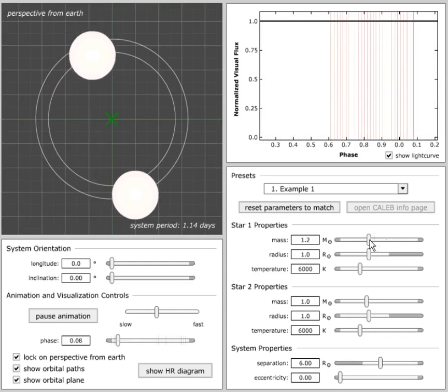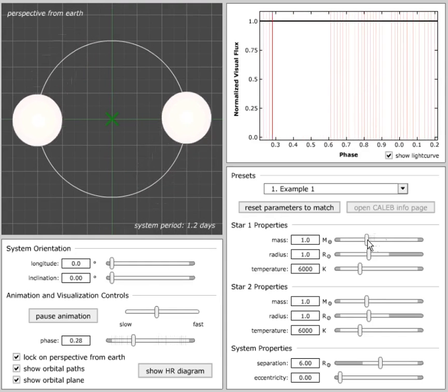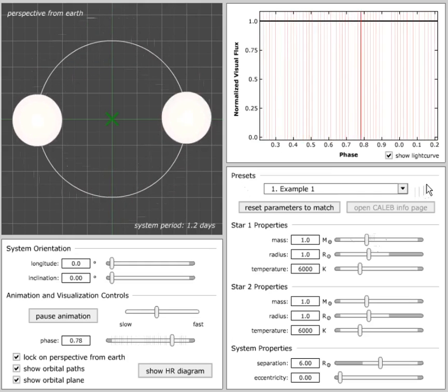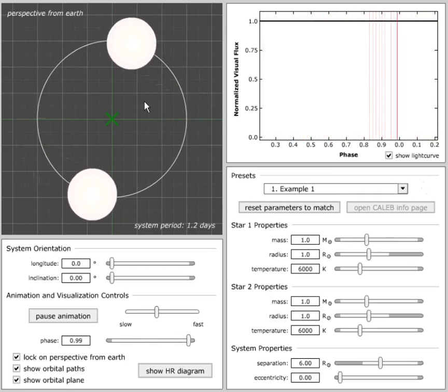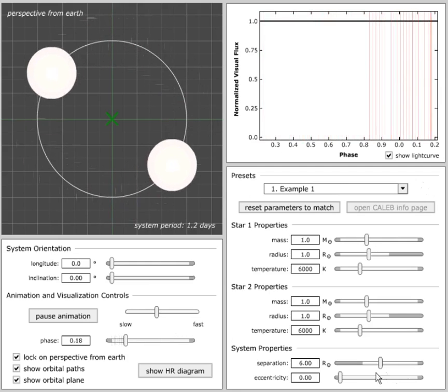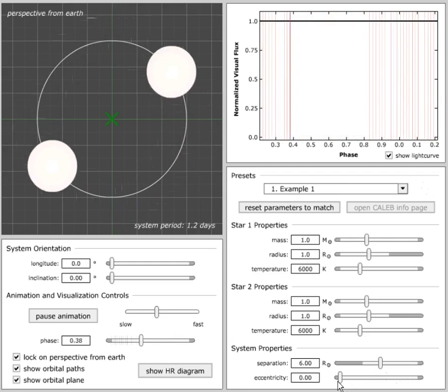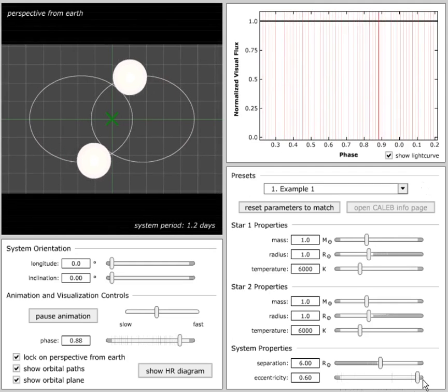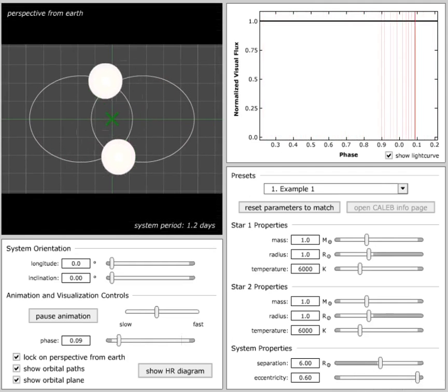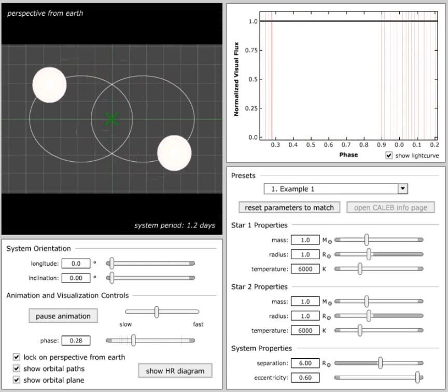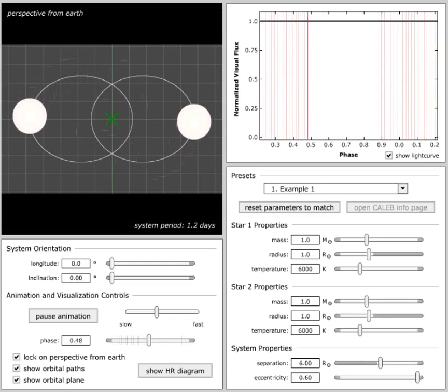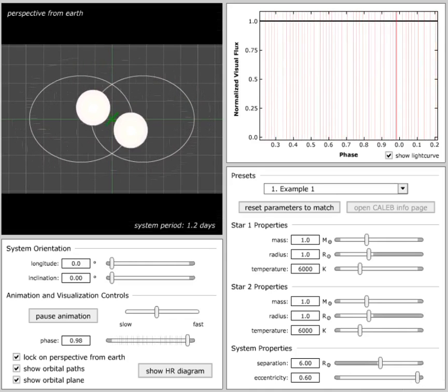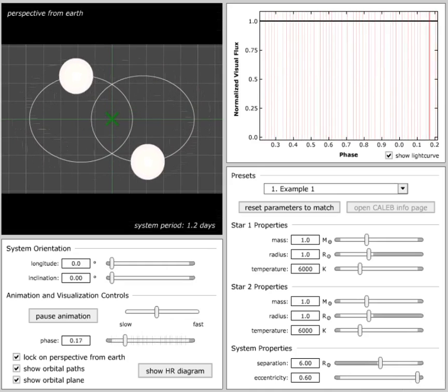So let me go back to equal masses here, and note the orbits are circular again. What will happen to the speeds of the stars if I make the orbit elliptical? Has the orbital speed changed? Okay, it's not the same value all the times. Some of the times it's faster. When is it faster?